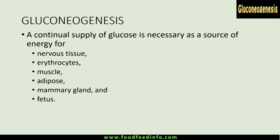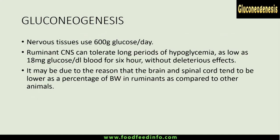Why is gluconeogenesis necessary? Some body tissues and organs rely on a continuous glucose supply for their functioning and viability — including nervous tissue, erythrocytes, muscles, adipose tissue, mammary glands, and the fetus. These tissues do not have pathways to synthesize glucose themselves, so a direct glucose supply is required. Nervous tissue alone uses approximately 600 grams of glucose per day.